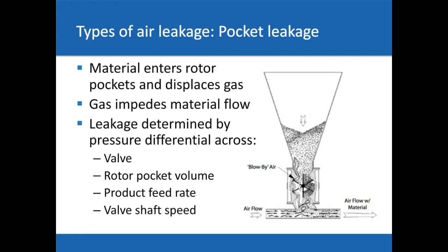Now, pocket leakage. When material enters the rotor pockets, it displaces gas, and that gas leaks out through the clearances when exposed to pressure at the inlet. The remaining gas gets sealed in the rotor until it comes around to the inlet, where it releases into the feed hopper above and restricts material flow. The total amount of rotor displacement leakage is determined by pressure differential across the valve, rotor pocket volume, product feed rate, and rotor shaft speed.